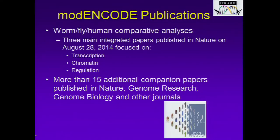Eric mentioned this morning—it seems like a couple of days ago already—so I just want to remind everyone about the modENCODE publication. The funding for that program ended in 2012, and this summer there was a series of publications that were the capstone of the project. This included worm, fly, and human comparative analyses. There were three main integrated papers published in Nature at the end of August, focused on transcription, chromatin, and regulation. These papers found commonalities in these processes across three evolutionarily quite diverse organisms. In addition, there were about 15 companion papers published in Nature, Genome Research, Genome Biology, and other journals.